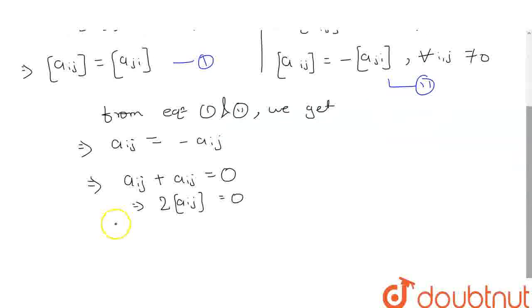So, we can write this as A ij, the elements of A matrix, equals 0, which implies that A equals 0. A equals 0 means, if it is a square matrix of order 2 by 2, all the elements are 0, or if A is a square matrix of order 3 by 3, then all the elements are 0.